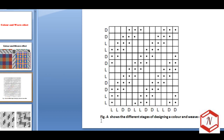As seen in the figure, the first step in the design of a color-and-weave effect is shown here. The basic design is a three-over-three twill, represented by dots. In the design of a simple color-and-weave combination, the arrangement of the threads as to color may be regular — meaning two dark, two light — or irregular.